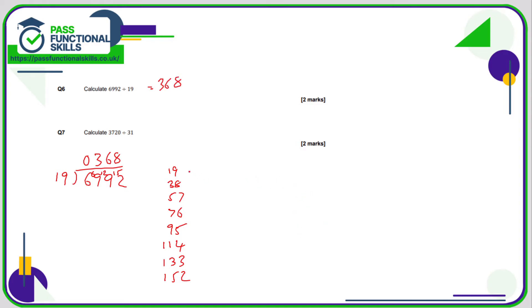Question number seven. This one looks like it should be really horrendous because we're dividing by 31, but it doesn't necessarily mean it's going to be horrible. Three divided by 31 can't be done. Move the three across. 37 divided by 31 is one, remainder six. 62 divided by 31 is two. Zero divided by 31 is zero. So that one was actually much easier than the previous one.